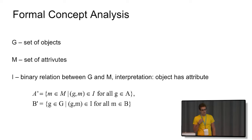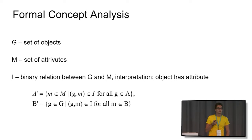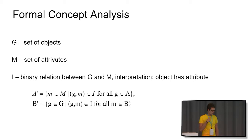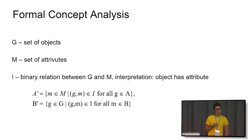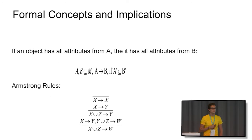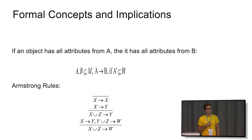These concepts can be naturally ordered using set theory operations — one concept is more general than another if all objects are included. The intuition is that you have all attributes, and usually no object has all attributes — that is a kind of bottom concept. On the top you have the reverse situation: all objects, but usually they do not have any common attributes. Then we can proceed to the concept of implication, which is designed to show dependencies between sets of attributes.